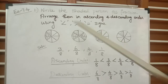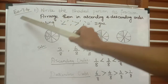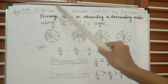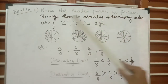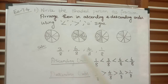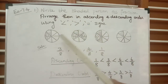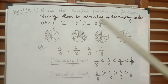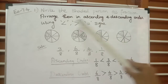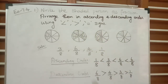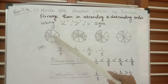Today we are going to see the first problem of exercise 7.4 — write the shaded portion as a fraction and arrange them in ascending and descending order using the correct signs. Four diagrams have been given; you need to write the fraction of the shaded portions and then arrange them in ascending and descending order using the proper signs.